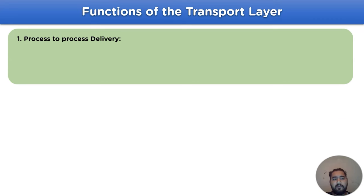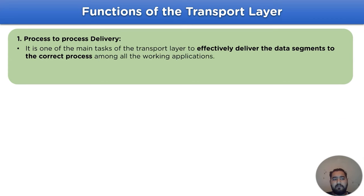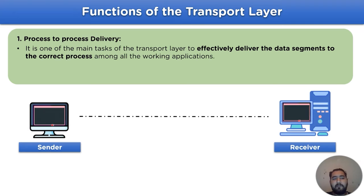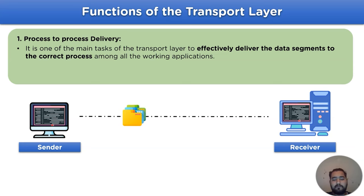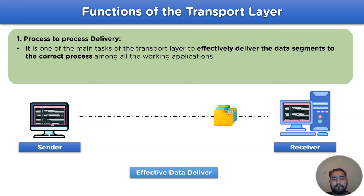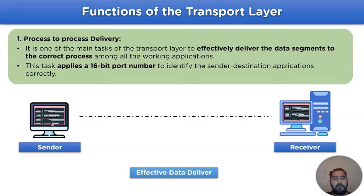The first is the process-to-process delivery function. It is one of the main tasks of the transport layer, designed to effectively deliver data segments to the correct process among all the working applications on the sender side. This task applies a 16-bit port number to identify the sender destination application correctly to transmit data over the network channel.